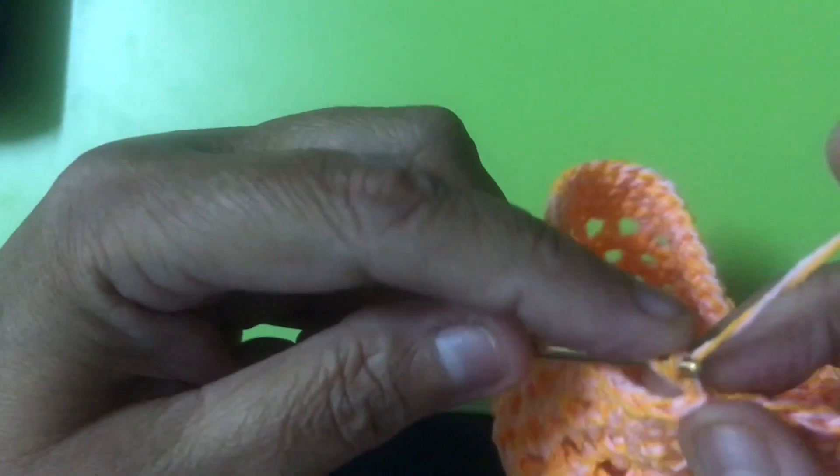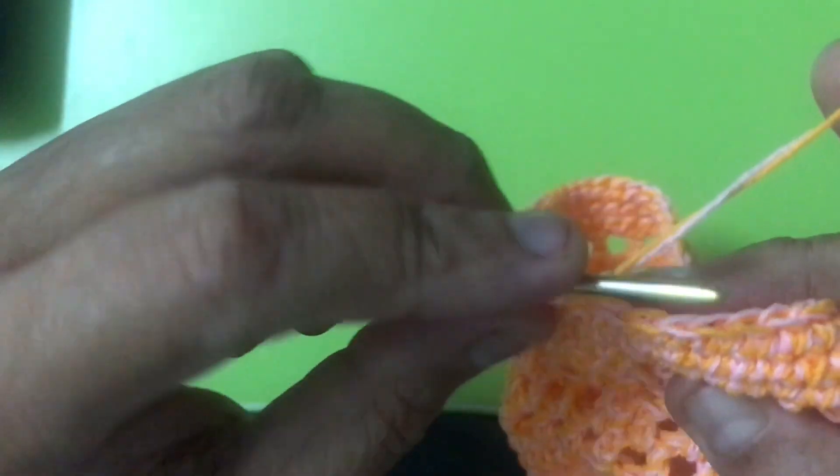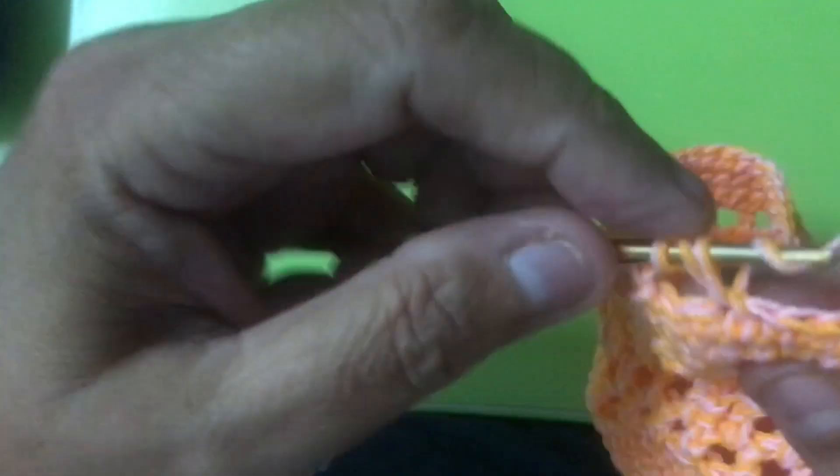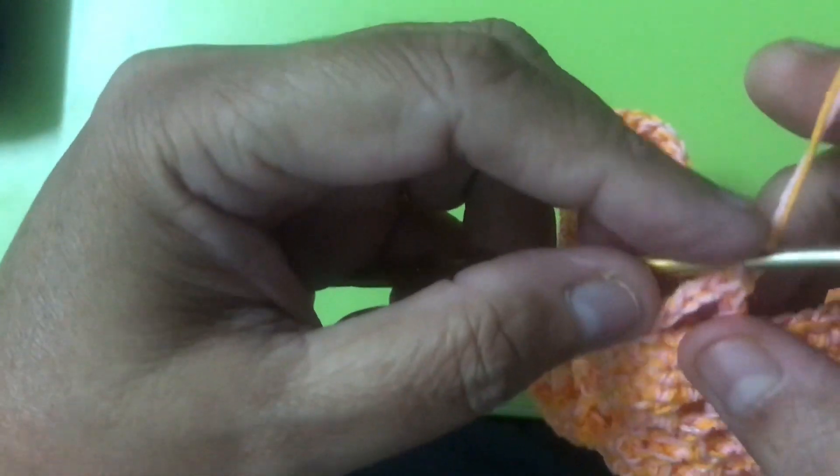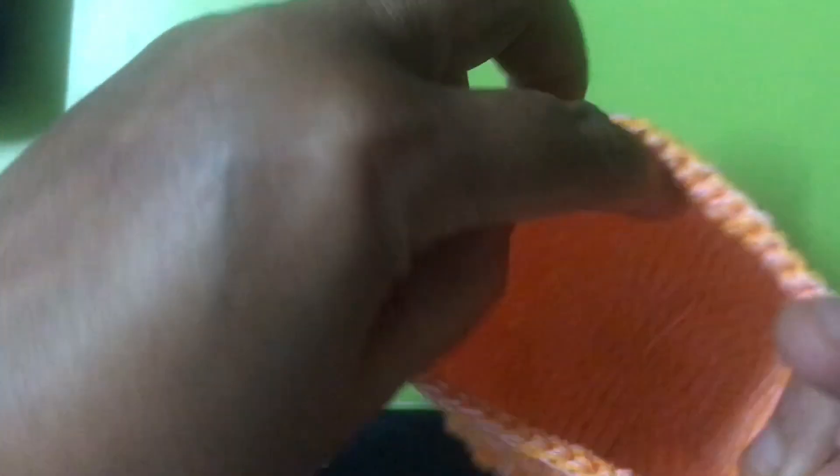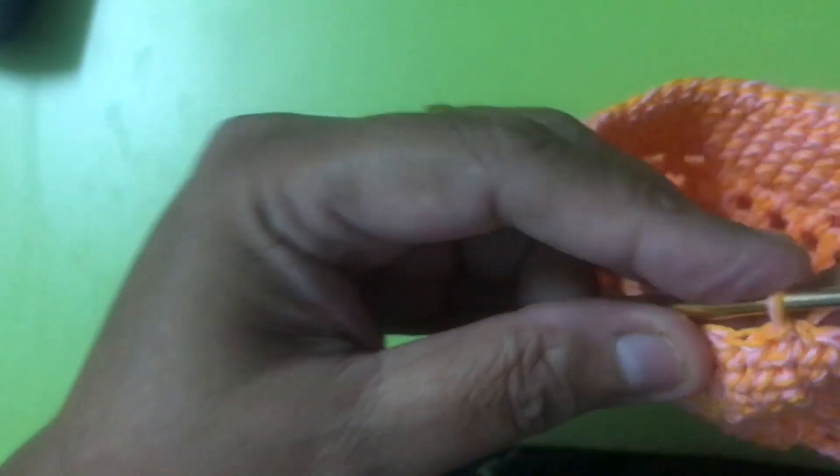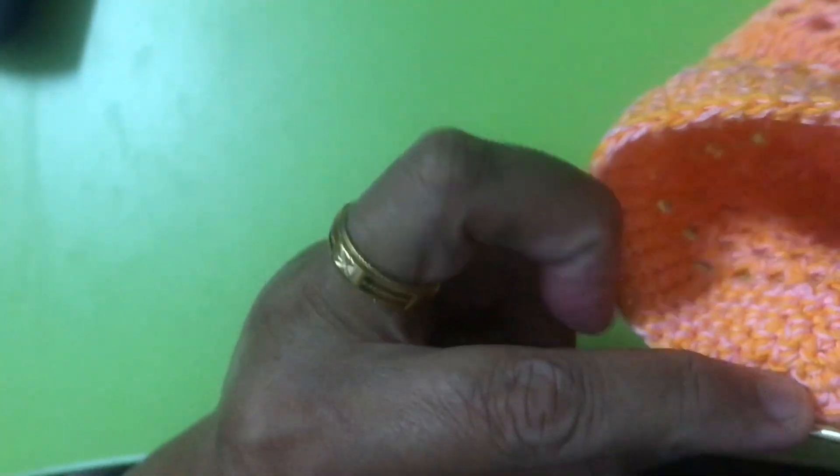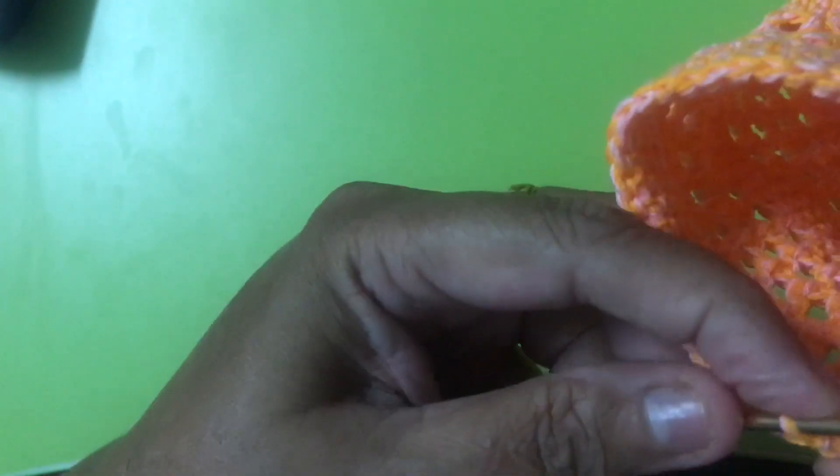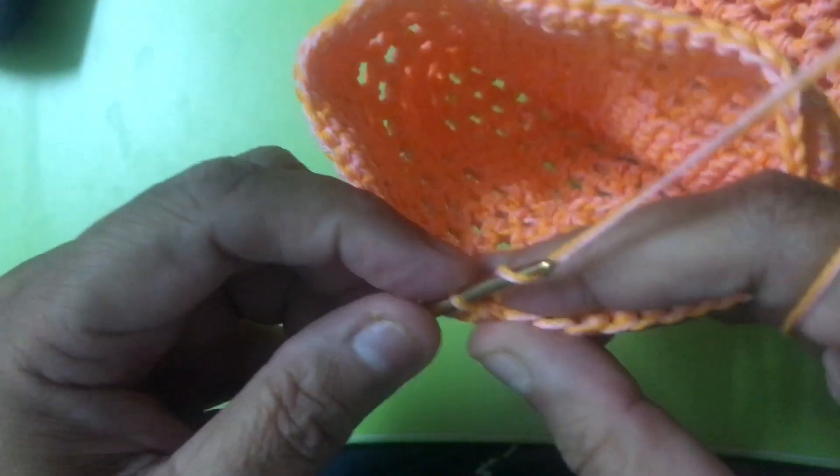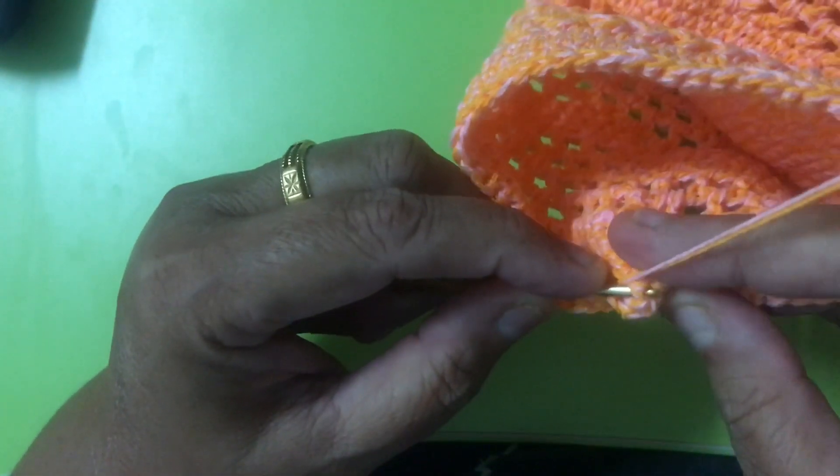Then one, two, three, four. Then I'm doing the double crochet here. I'm going to the back part, do one chain, and then I do a slip stitch here.